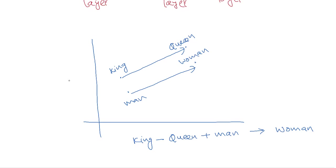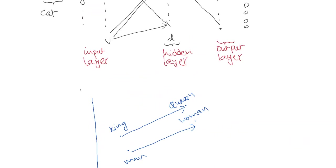In conclusion, we can learn word embeddings through term frequency representation, latent semantic analysis, or word vectors. The bottom line is that we represent text as a set of vectors — a word as a vector. Which one performs best depends on the method and application, but generally word2vec is preferred in recent times.